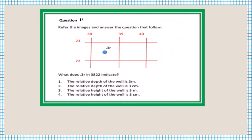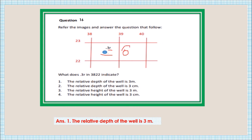The last question: what does '3R' in grid square 3822 indicate? You can see the symbol of a perennial lined well with '3R' given beside it. This shows the relative depth of the well, which is 3 meters. If the same notation is shown against a tank with an embankment, then it represents the relative height of the tank — for a well, it is always the depth.